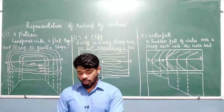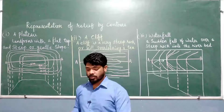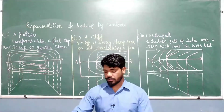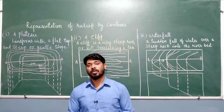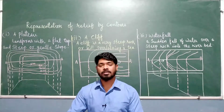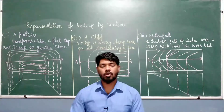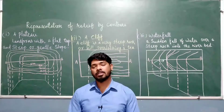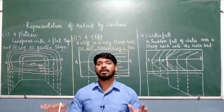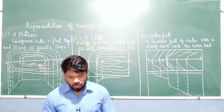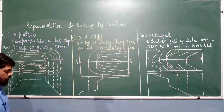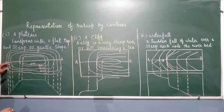Talking about plateau — as you know, a plateau is also known as table land, meaning it has a flat top and steep or gentle slopes on the surrounding areas. On the top it is flat, like a table land. So how will this be shown in contour lines on the topo sheet?